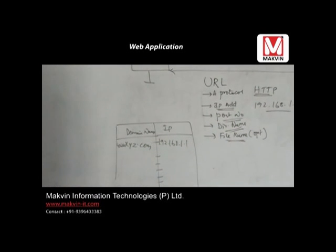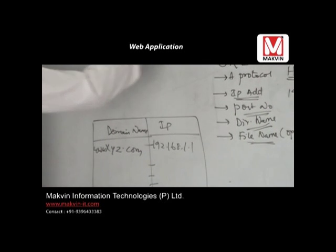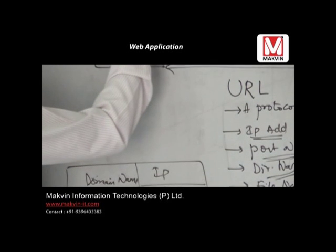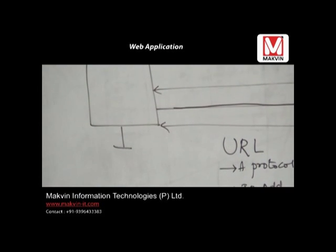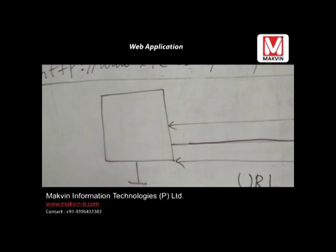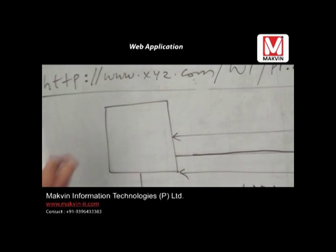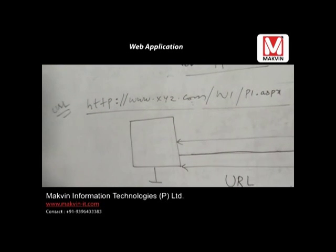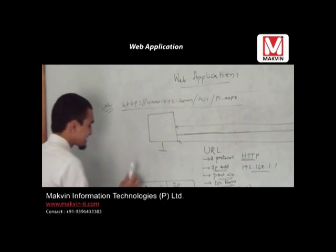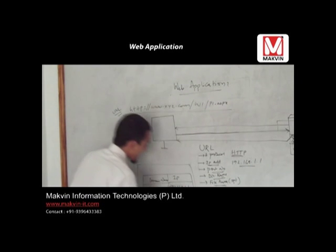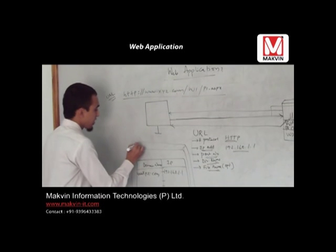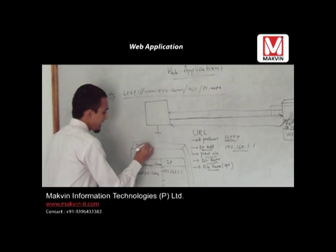We do not write the IP address. We write www.xyz.com. Now, whenever I write this, I want to reach to that system. To reach it, I need to have that IP address. The IP address is present in a separate server — this server is called the DNS server.